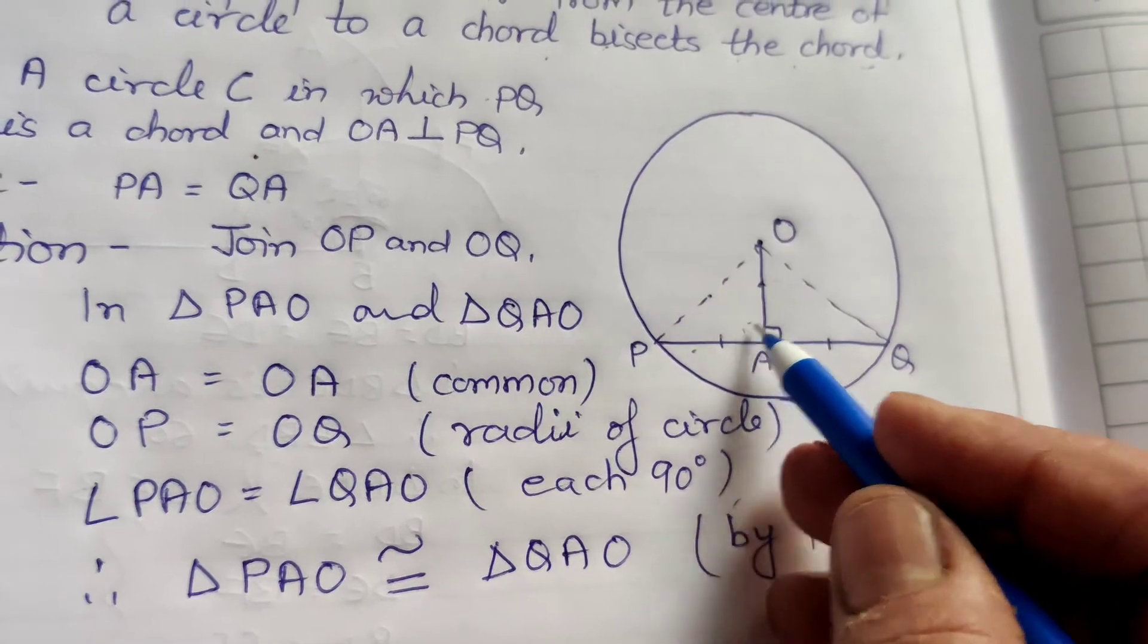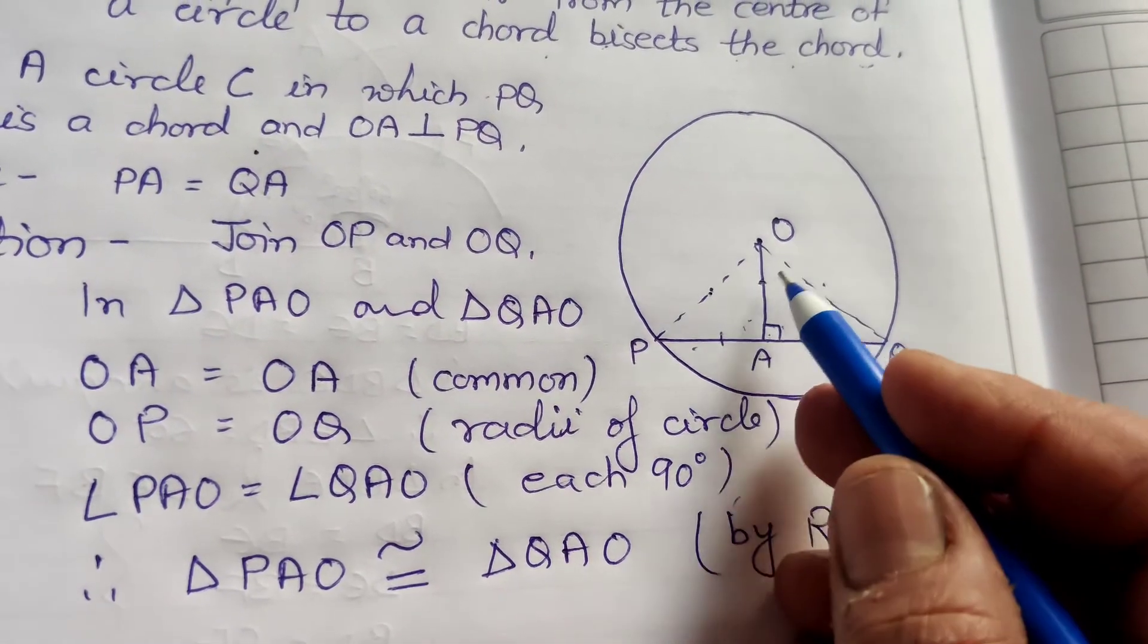Right angle bharabar hai dounou mein, hypotenuse bharabar hai dounou mein, or eek side bharabar hai.